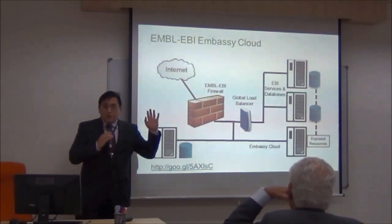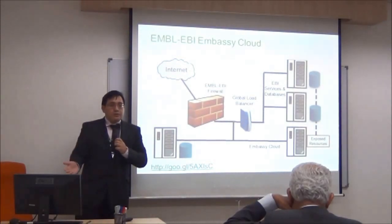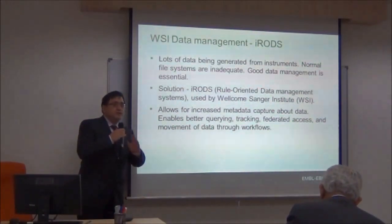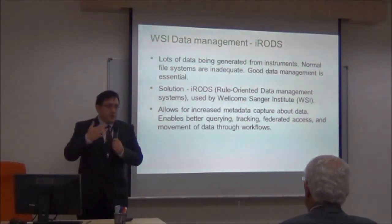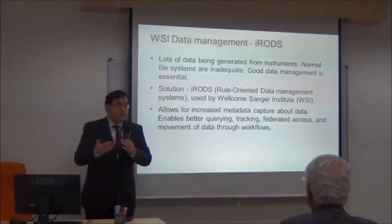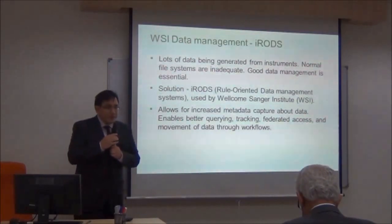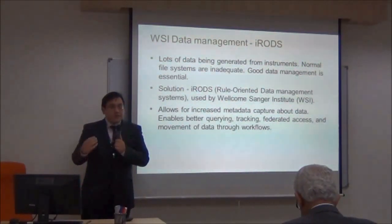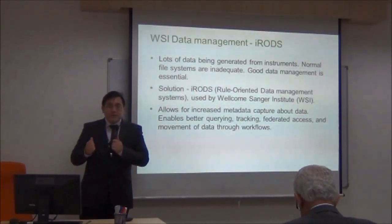This is a topography diagram showing how that works: you connect through the internet, go through the EBI firewall, and your Embassy Cloud runs on our computer processing nodes against our databases and data files. Beyond analysis, I know other places are mainly involved in generating samples. Big laboratories are now wanting to manage all of their samples. I know from the Wellcome Sanger Institute, which shares the same campus as the EBI, they use a system called iRODS — Rule-Oriented Data Management Systems — because they generate so many samples and so much data that they need a very robust system to track everything.